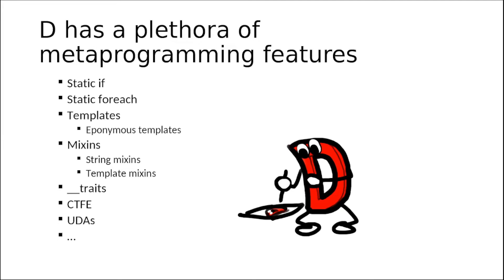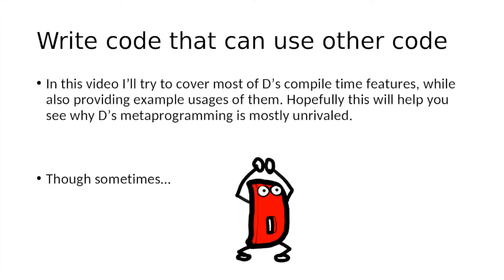D has a plethora of metaprogramming features, including Static If, Static Foreach, Templates, Eponymous Templates, Mixins, String Mixins and Template Mixins, Traits, Compile-time Function Execution, User Defined Attributes and likely more. D excels at writing code that can use other code. In this video I'll try to cover most of D's compile time features but also provide example usages of them. Hopefully this will allow you to see why D's metaprogramming is mostly unrivalled.